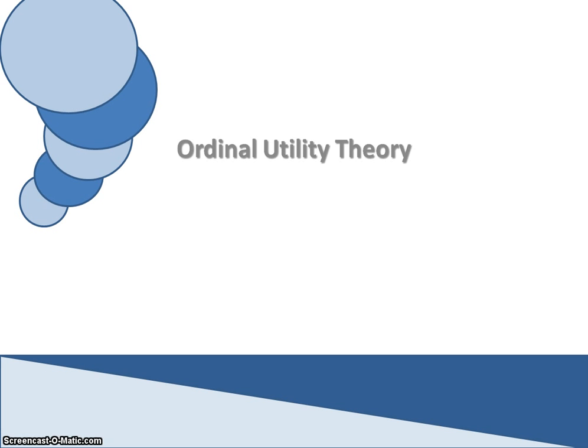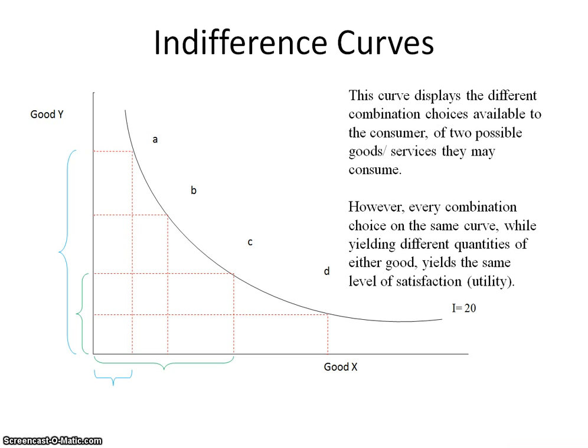How can you assign a numerical value for a unit consumed or for a service consumed? What the Ordinal Utility Theory posits is that while we may not be able to calculate utility, we can represent different levels of satisfaction via diagrams, and this is where we bring the indifference curve analysis to the forefront. What is an indifference curve?